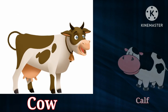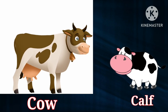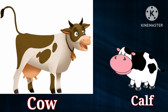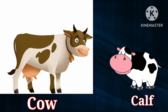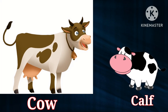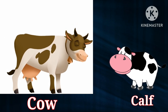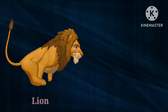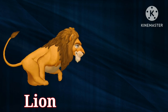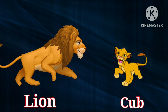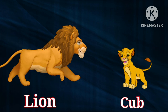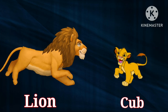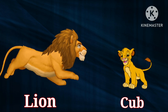Cow. Calf. The baby of cow is called Calf. Lion. Cub. The baby of lion is called Cub.